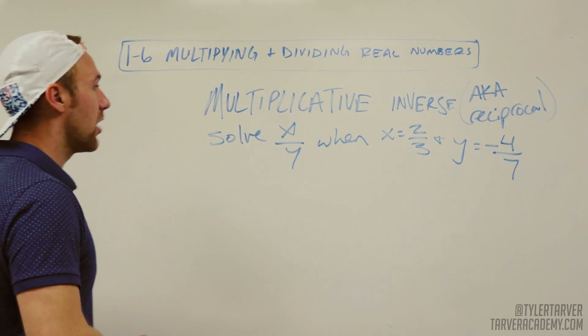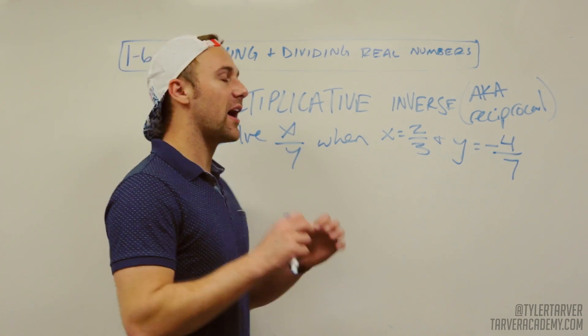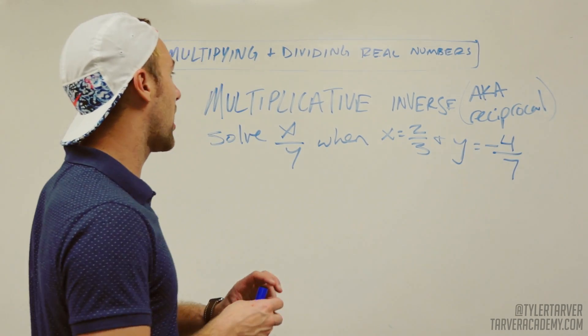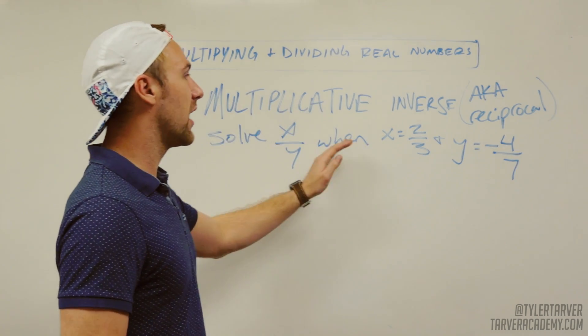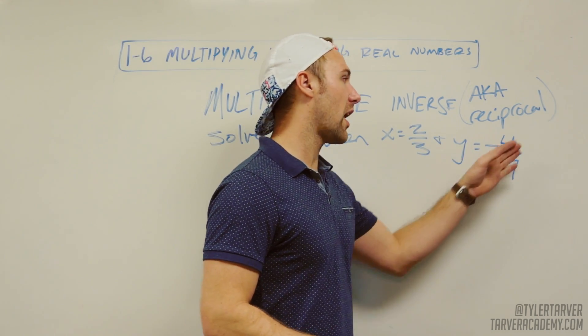Okay, so we want to talk about multiplicative inverse in solving problems. Here's an example: solve x divided by y when x equals 2 over 3 and y equals negative 4 over 7.